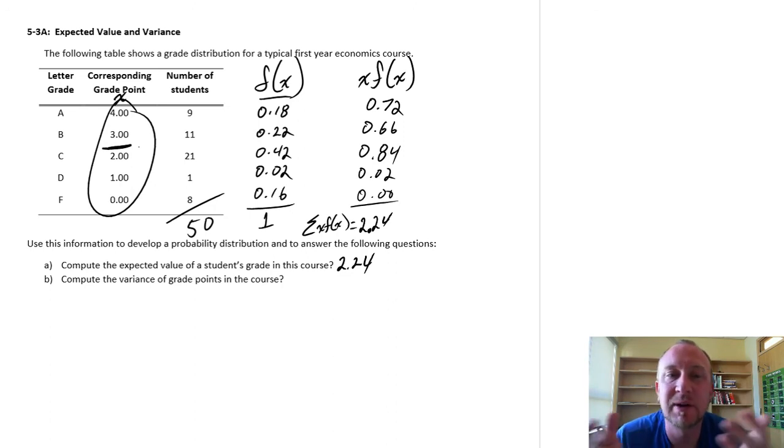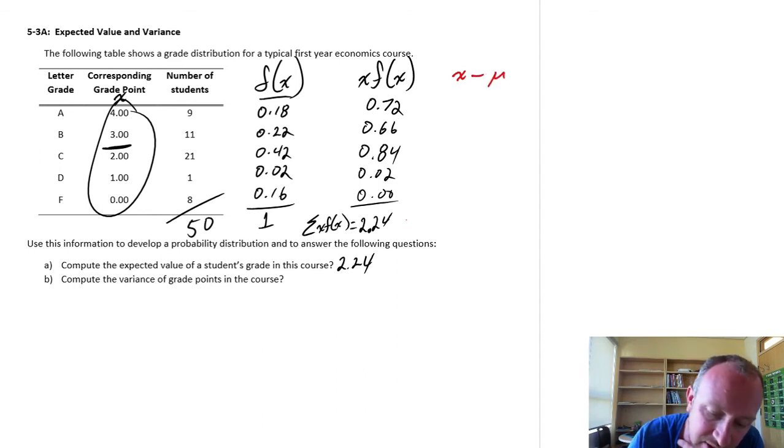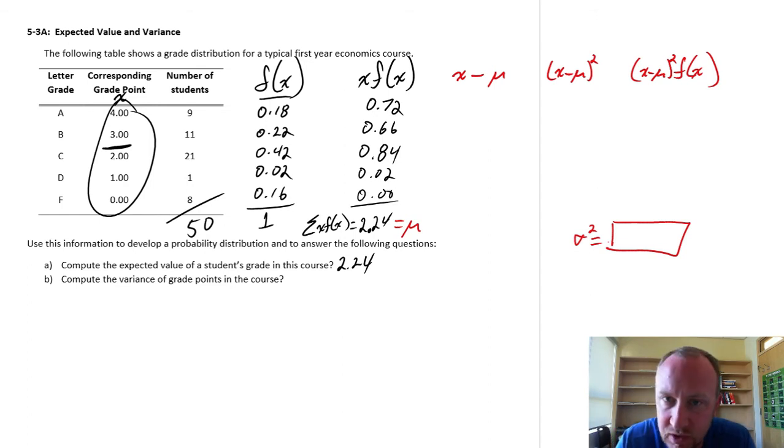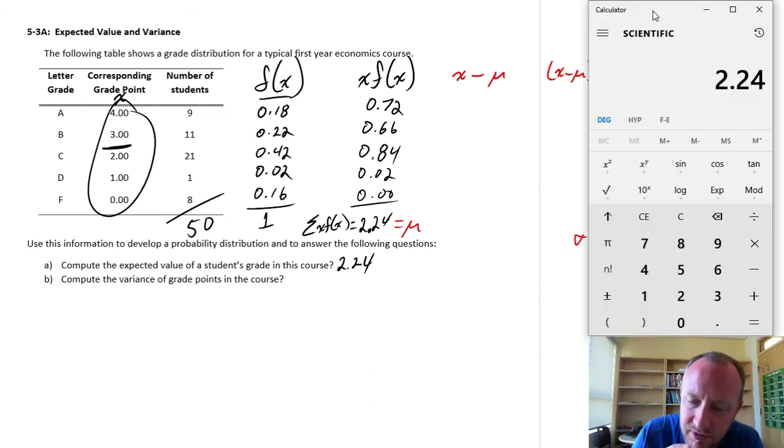So that gives us our expected value of the student's grade. Now, we need that to calculate the variance of grade points or the variance of grade in this course. So a couple more things that we need to calculate. One is the difference between the values for our discrete variable and the mean. Now, here I've calculated that mean, so we've already got that one step done. Then what we need to do is square those values. Then what we need to do is take those values that we've squared and multiply them by their relative frequencies. And then we're going to add all of those up. And somewhere down here will be our variance. It's a few little tedious calculations. It's good to get lots of practice on these because there's just so much room for error.